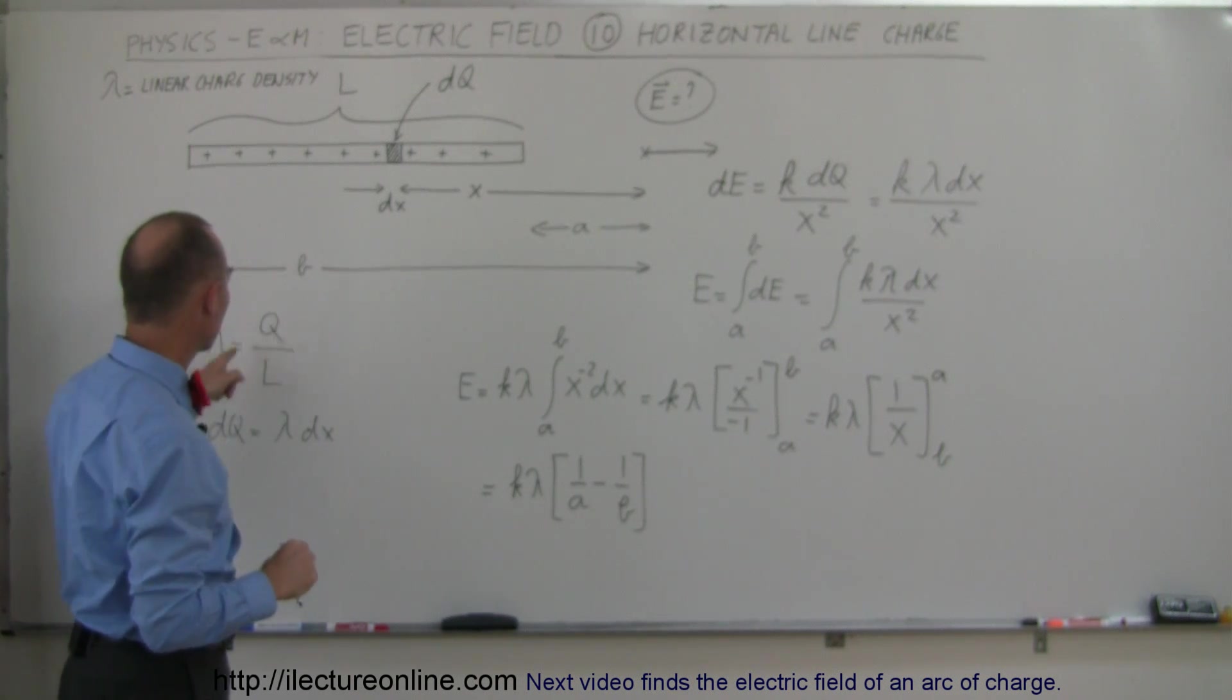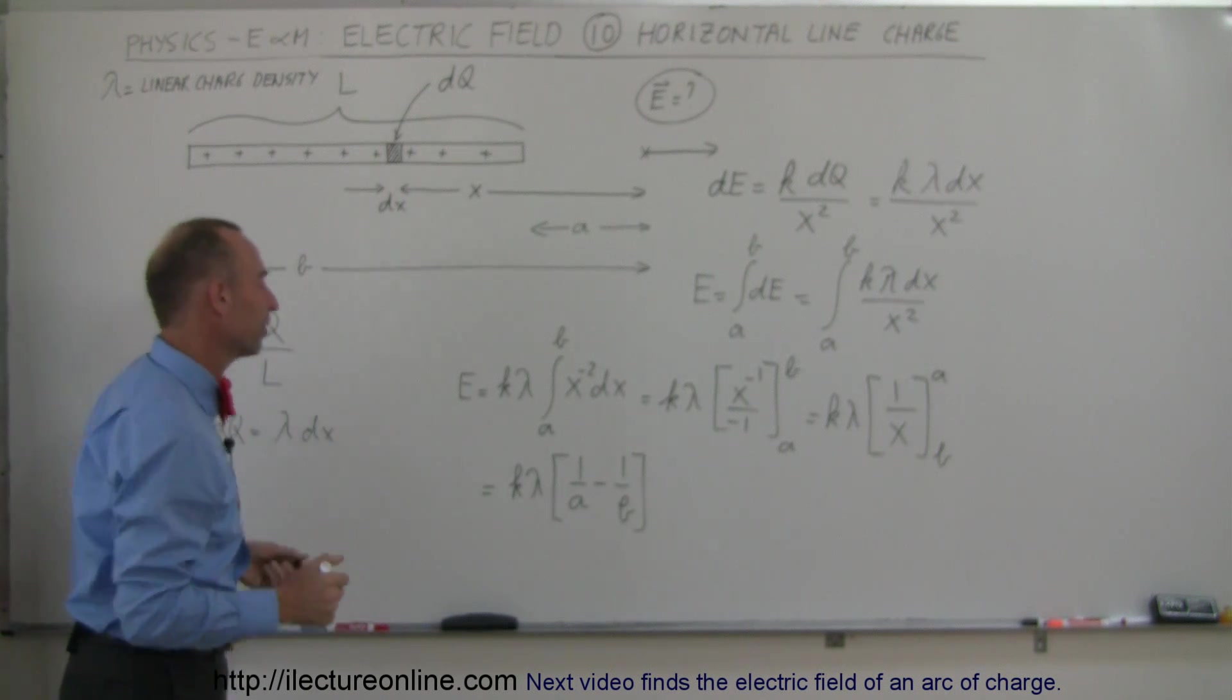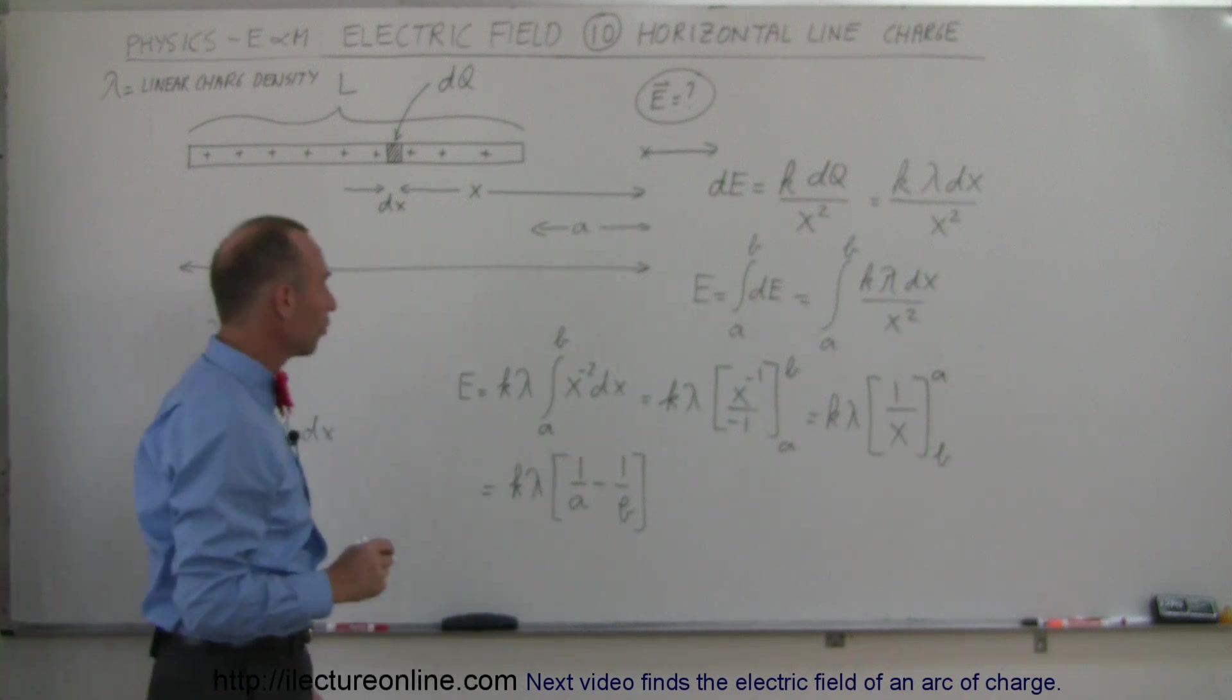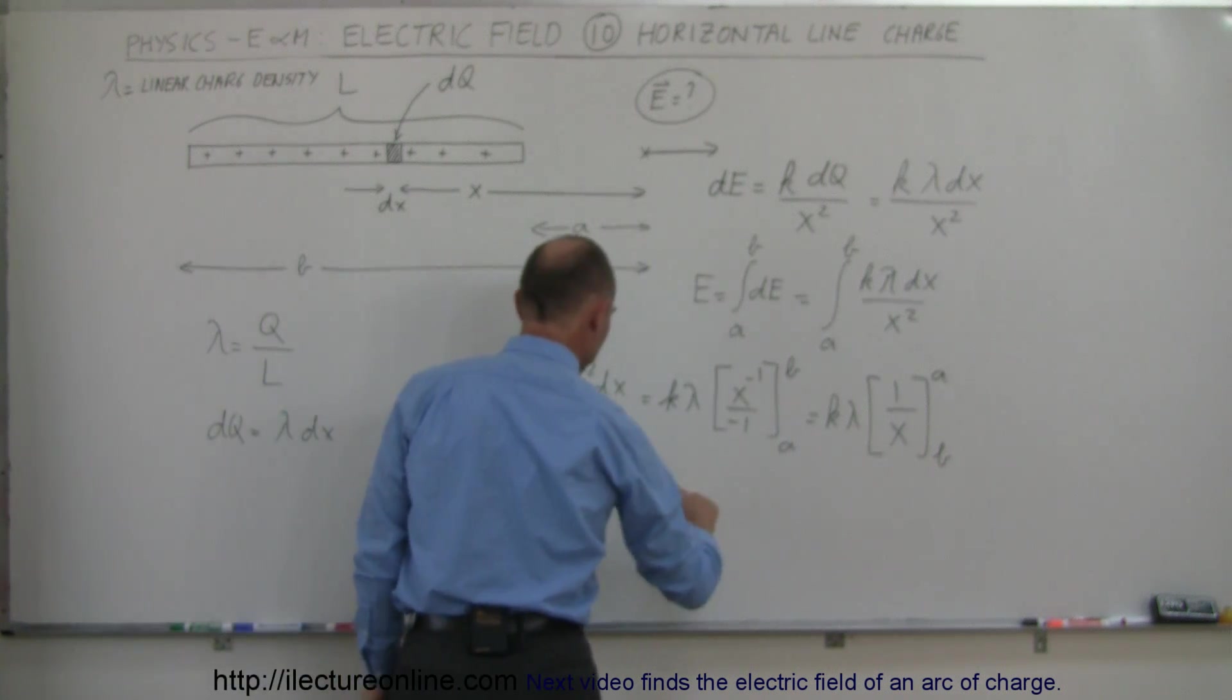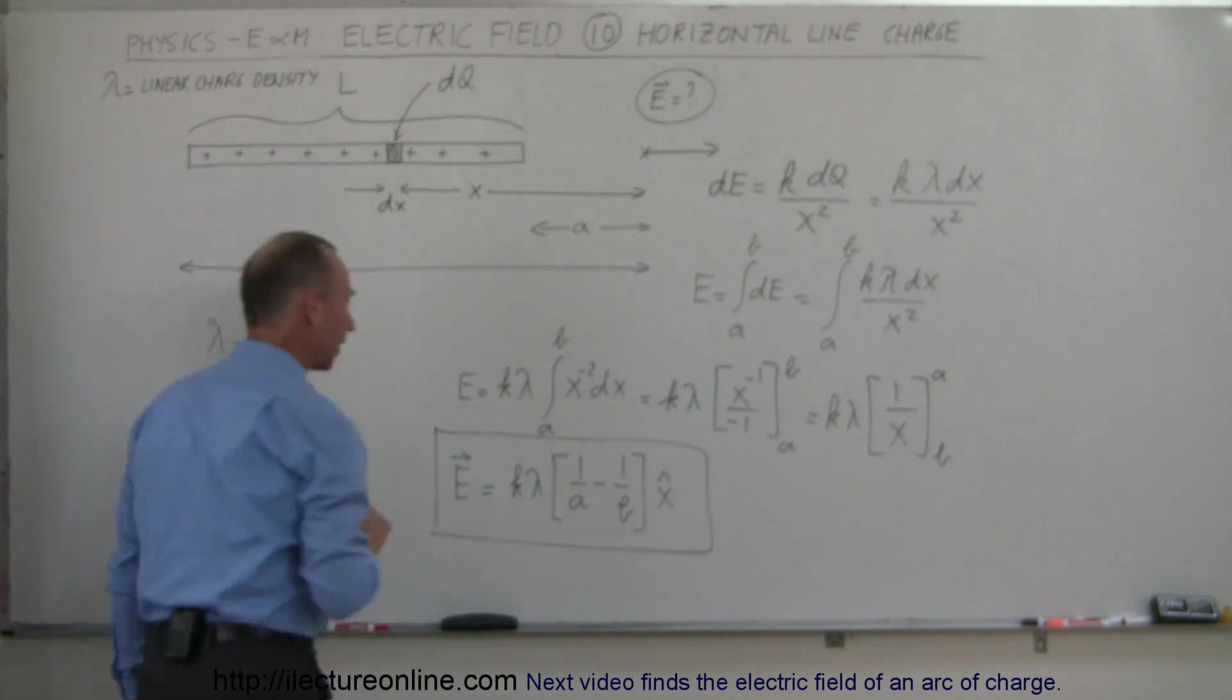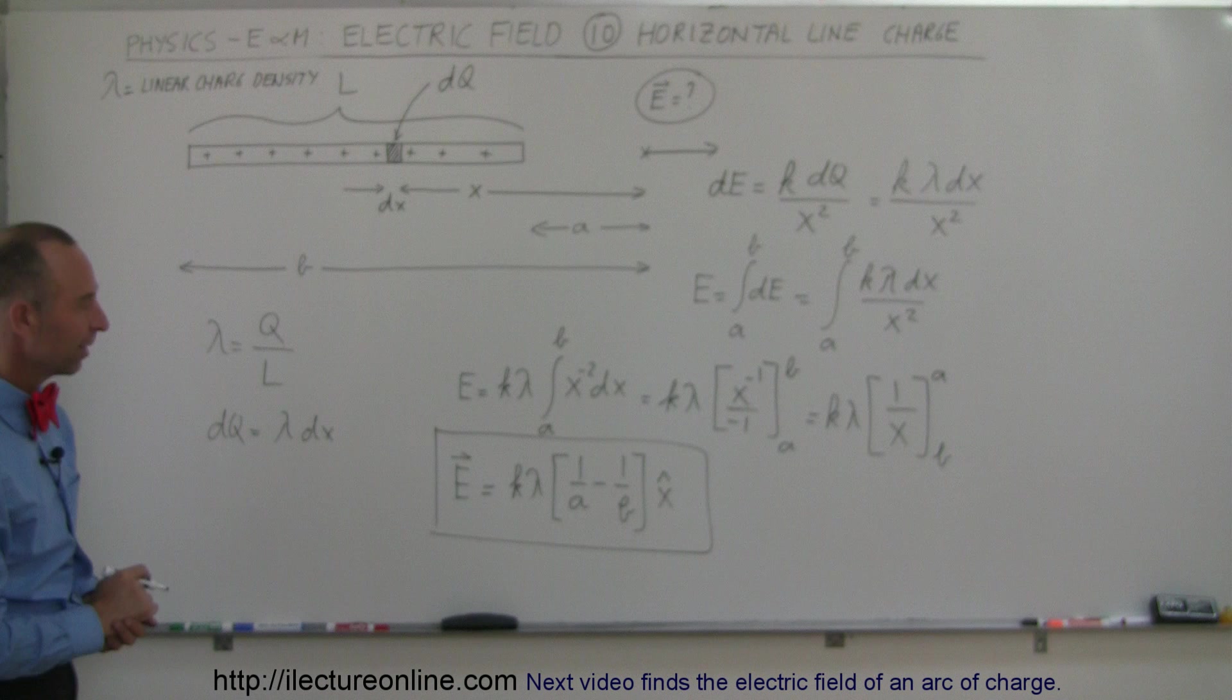Now, what we could do, we could put Q over L for lambda, or we could just leave it as it is, and, well, this is interesting, there's no variables left in there. So that means the electric field, if we want to make it into a vector, is equal to this quantity in the positive X direction, and there you go. That's how we find the electric field due to a horizontal line segment.